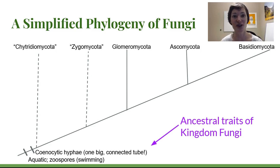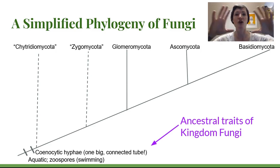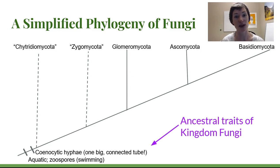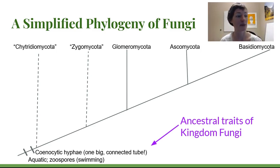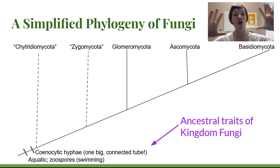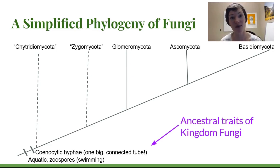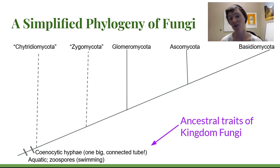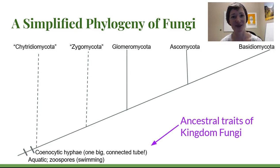They also had swimming spores and were coenocytic — a term that may be new to you. Coenocytic means it's not divided into different cellular components; it's all one connected tube. For fungi, that means there are no cross walls within their hyphal filament — it's one big connected tube. The whole mycelium for a coenocytic fungus is all connected, which could present problems: if you damage a certain part of that mycelium, all of your cytoplasm could leak out. That's sort of the evolutionary pressure driving the development of septa in higher fungi.